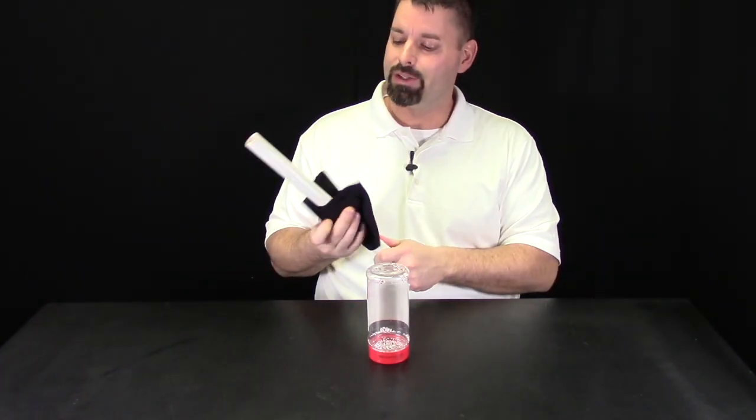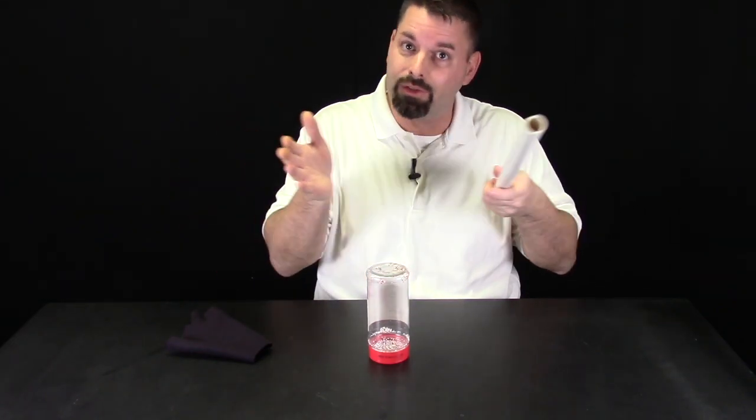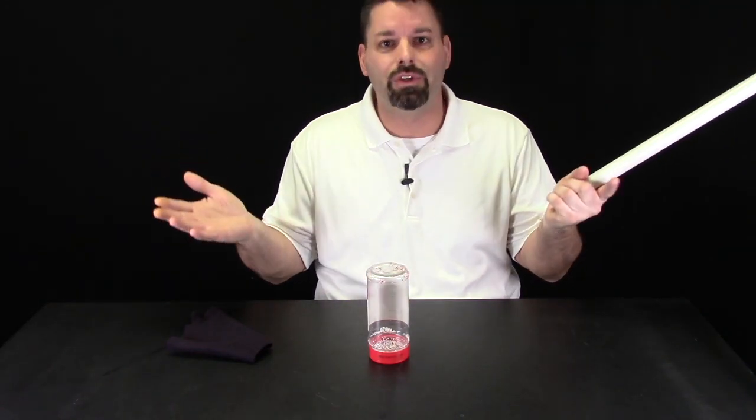So what made that cup and those bubbles move? Well, it was static electricity. As I rubbed this plastic pipe with the wool, it became negatively charged. And that cup and the water in those bubbles were slightly positively charged. So as I brought the two together, those two opposite charges attracted.